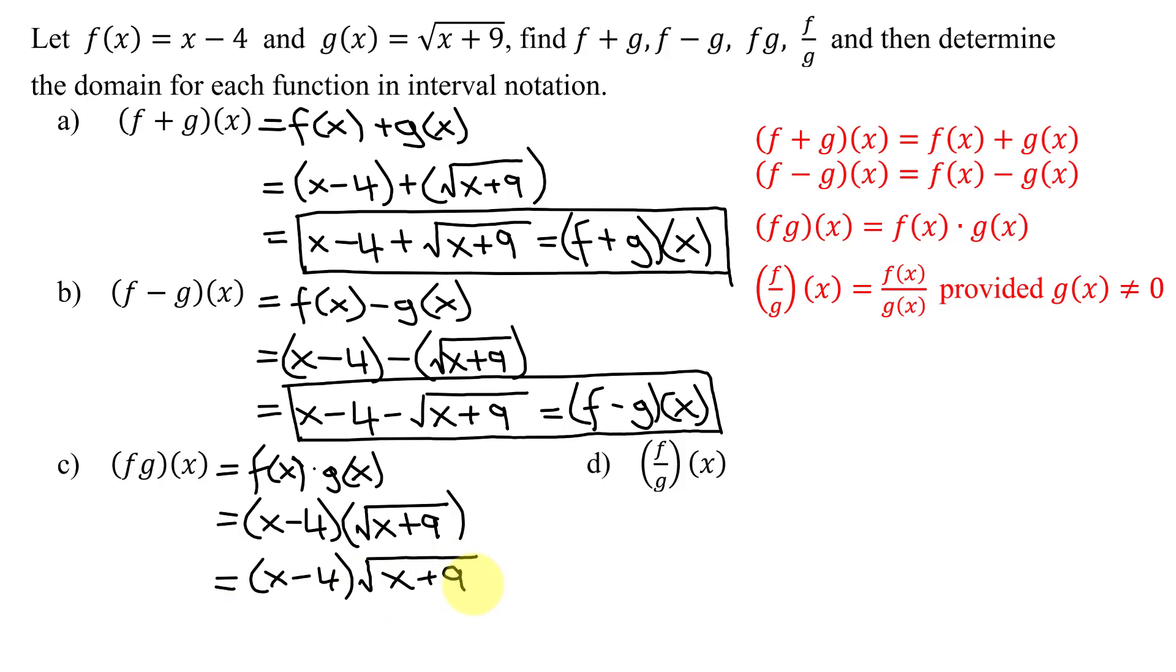Now that is one way of writing the answer. The other way is to multiply this out, and I get x times the square root of x plus 9, minus 4 times the square root of x plus 9. So those are both two ways of writing f times g of x. It can be written either of those two ways.